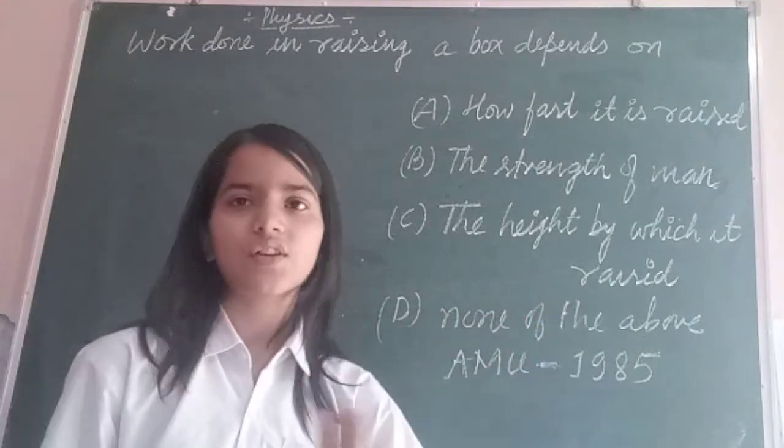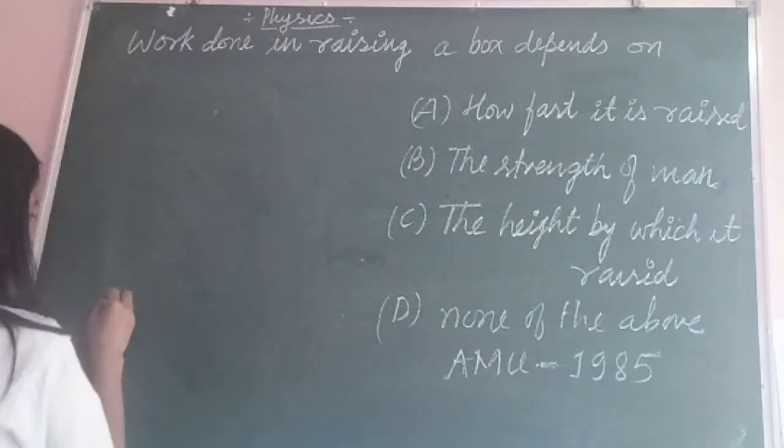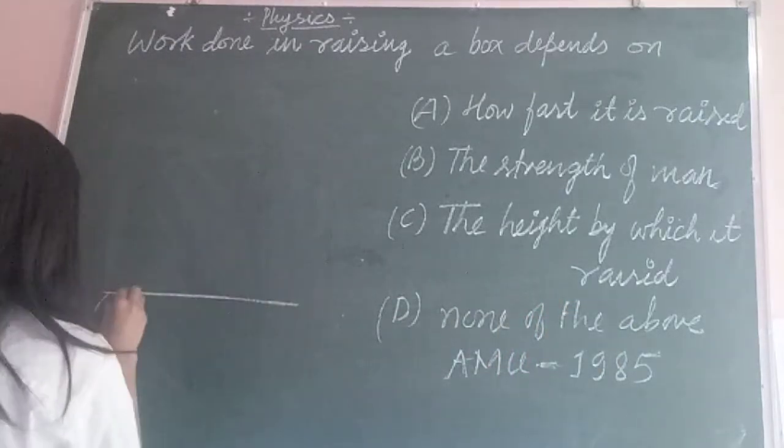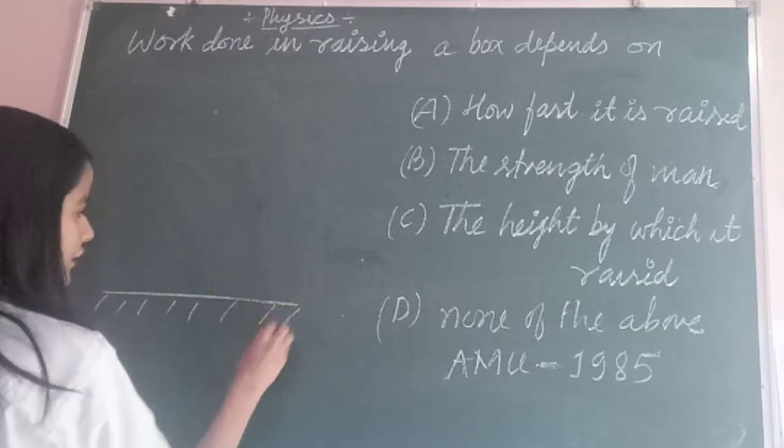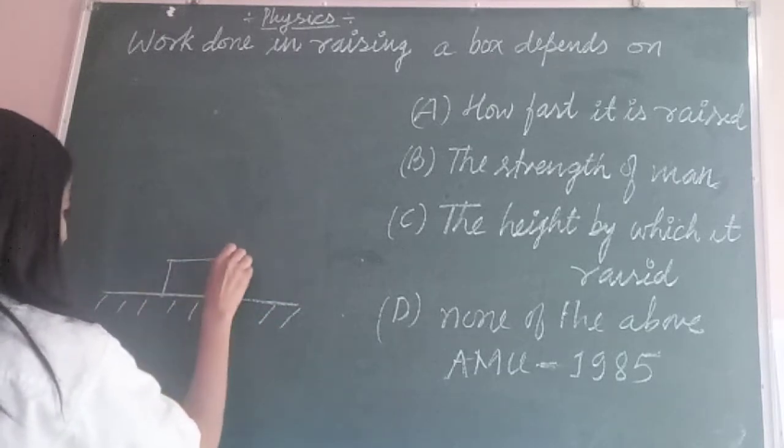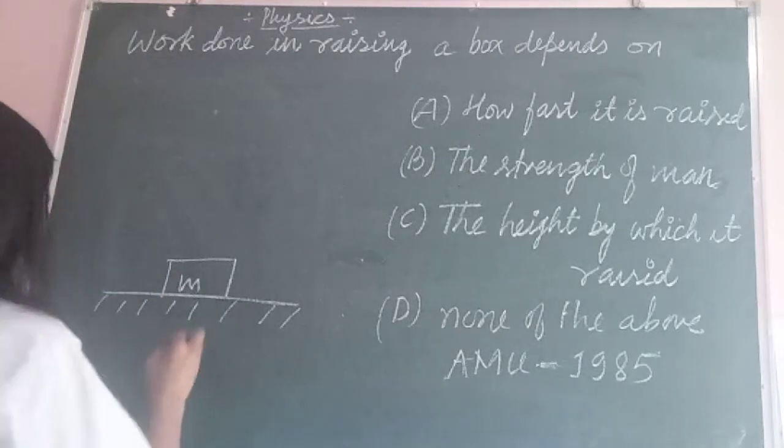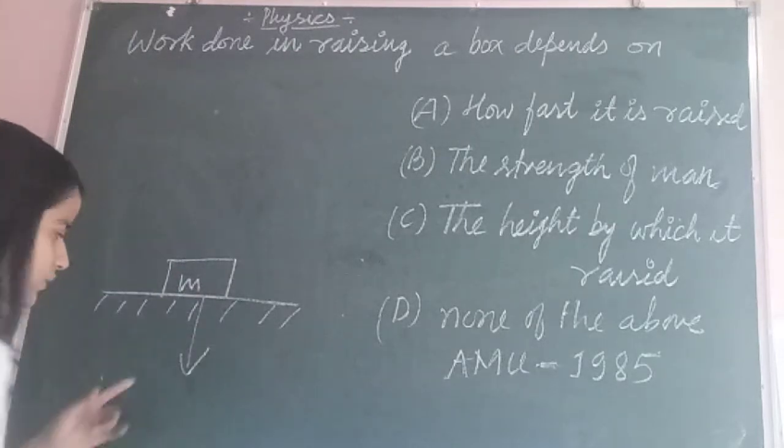So here is the object or body on earth's surface of mass m, and its weight is Mg.